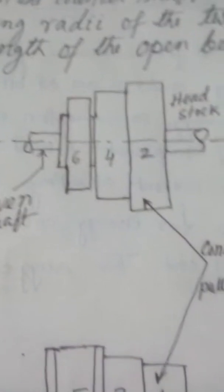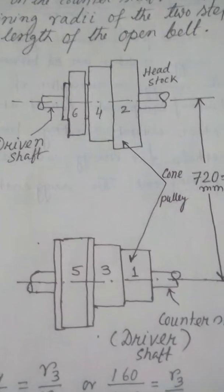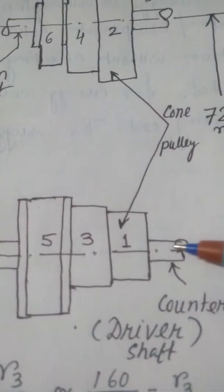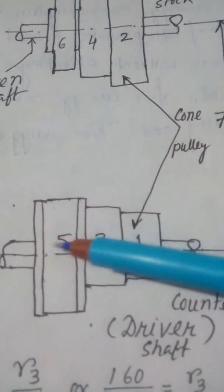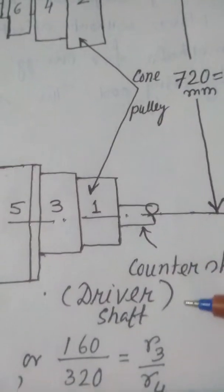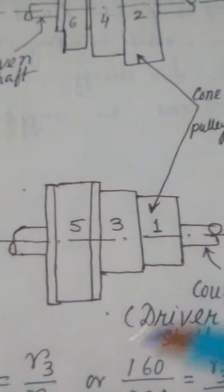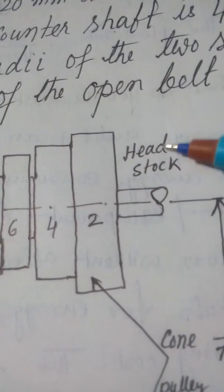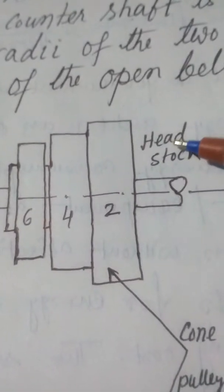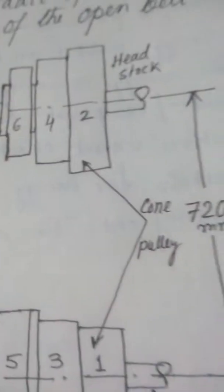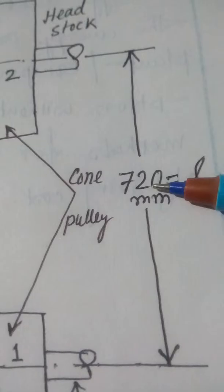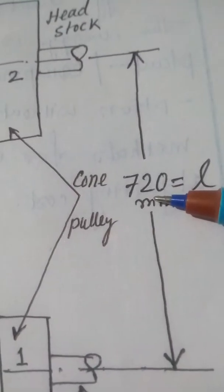Please see the figure of the stepped pulley. This is the counter shaft — the driver side — and this is the driven shaft on the lathe headstock side. The distance between the axes of these two shafts is L = 720mm, which we use when finding the length of the open belt.